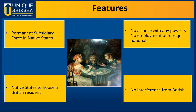The ruler could not employ any non-British European in his service, or dismiss those who were already there. The Indian ruler could not enter into any alliance with any power without the consent of the company. And if the native state accepted all these treaty terms, then the British would not interfere in the internal affairs of the state.